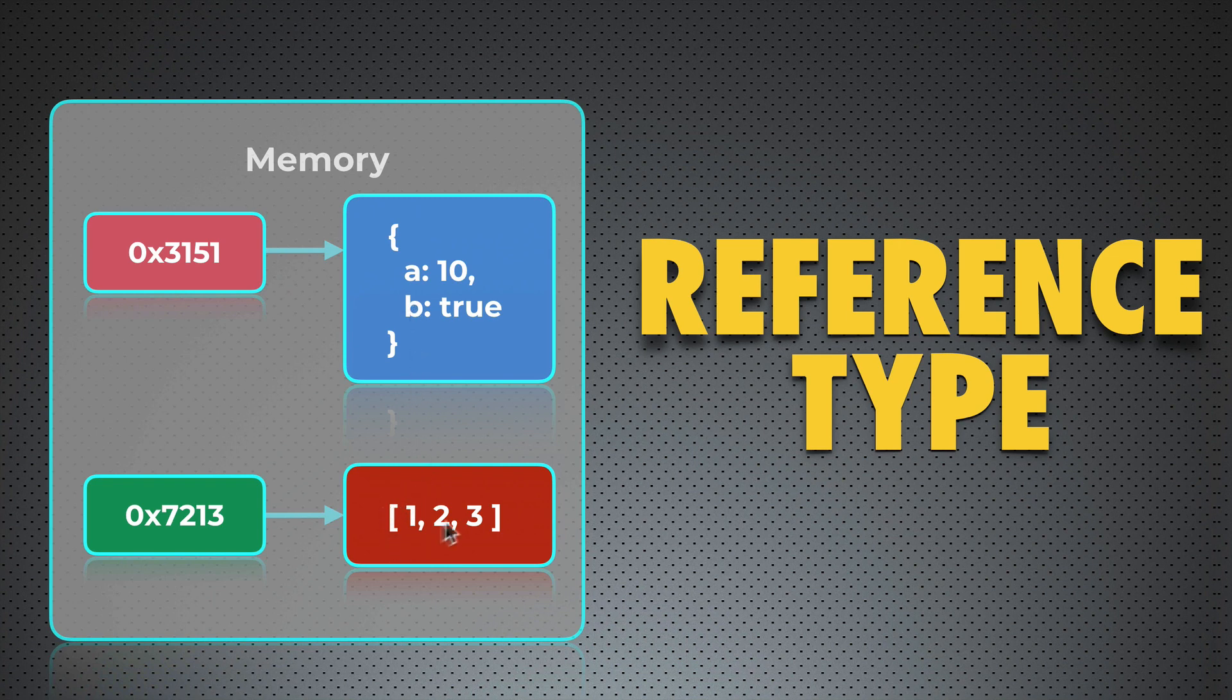But this doesn't impact the way how those values are stored in the memory. Because in both cases, this value and this value has reference type, that is object. That is why values in those examples are stored in the memory along with pointer, that points to location of those values in the memory. And that is the reference type, object.